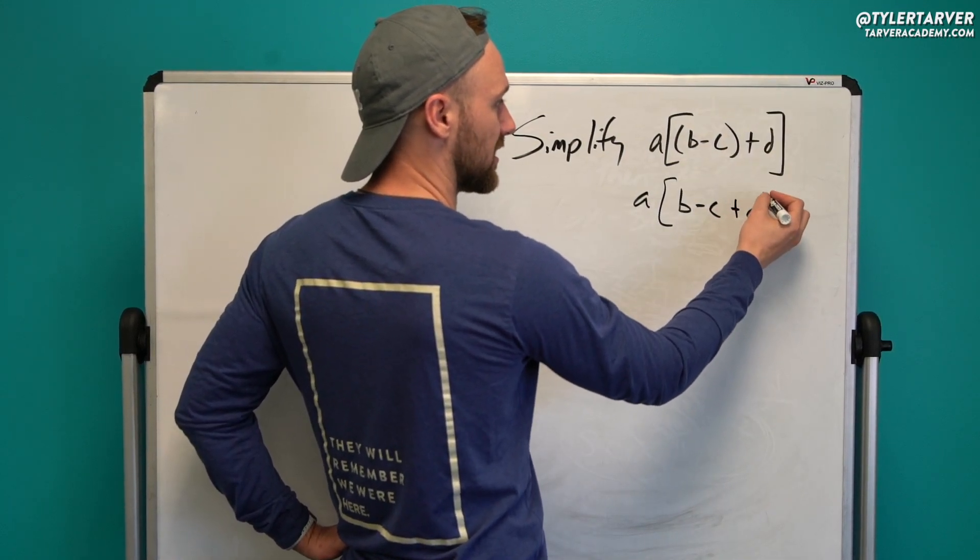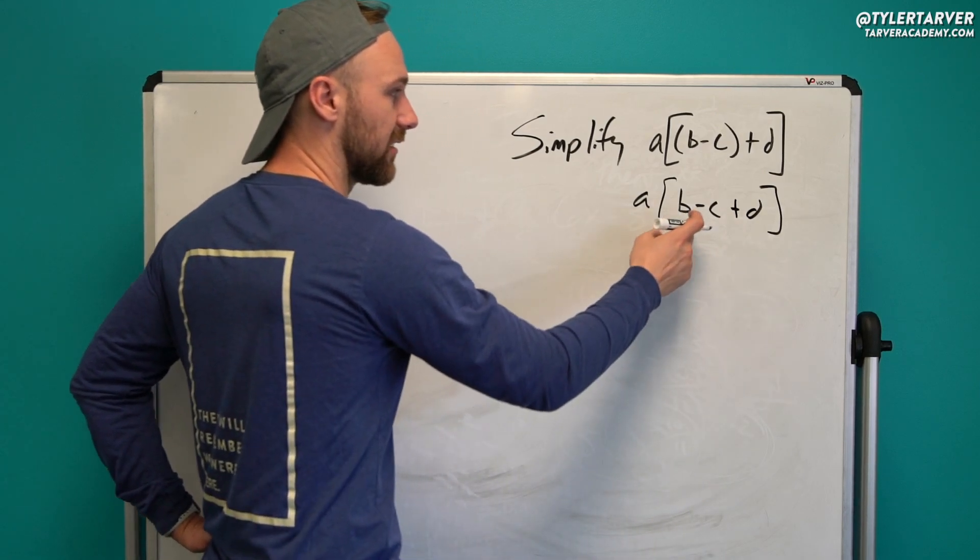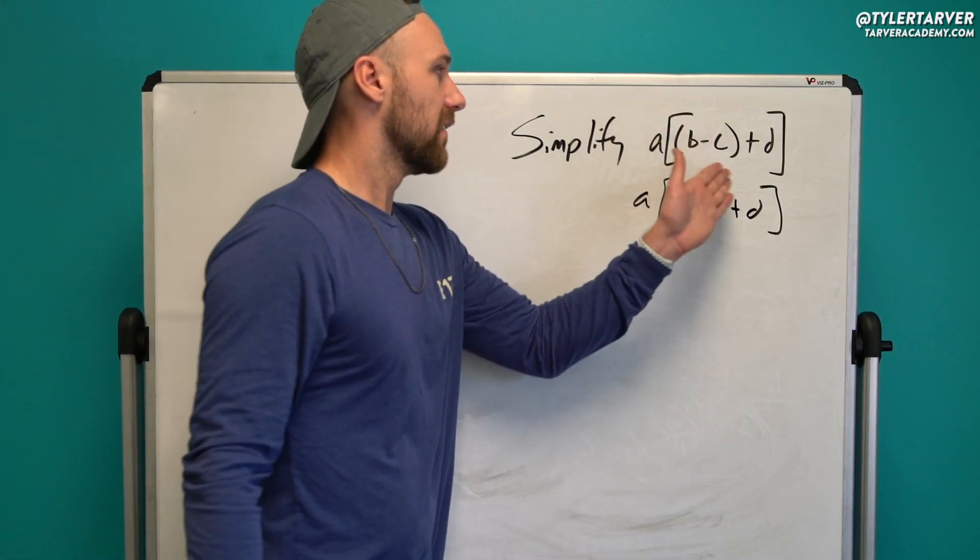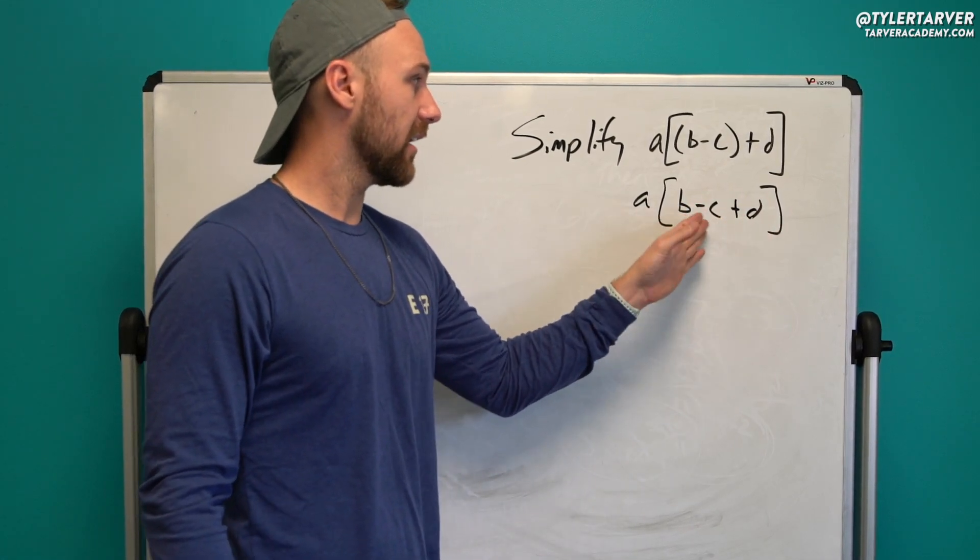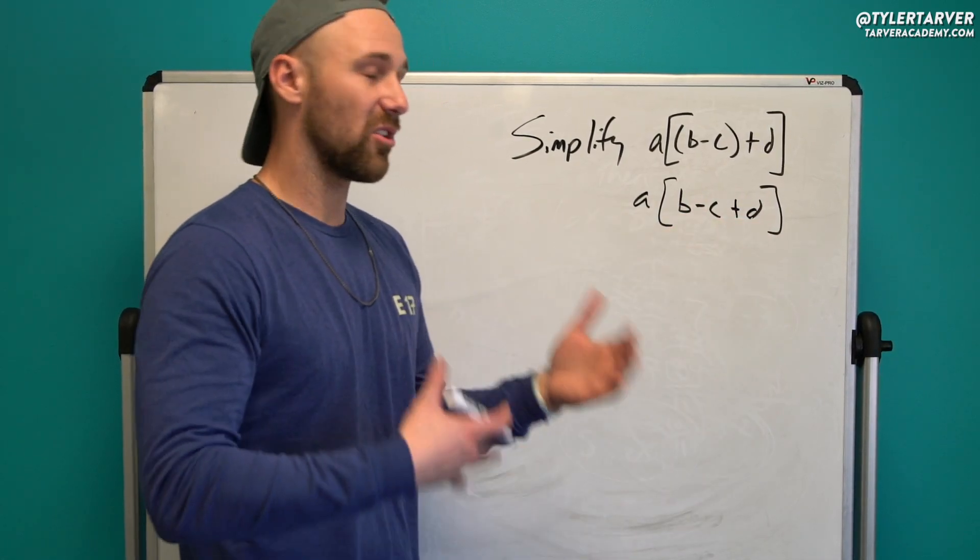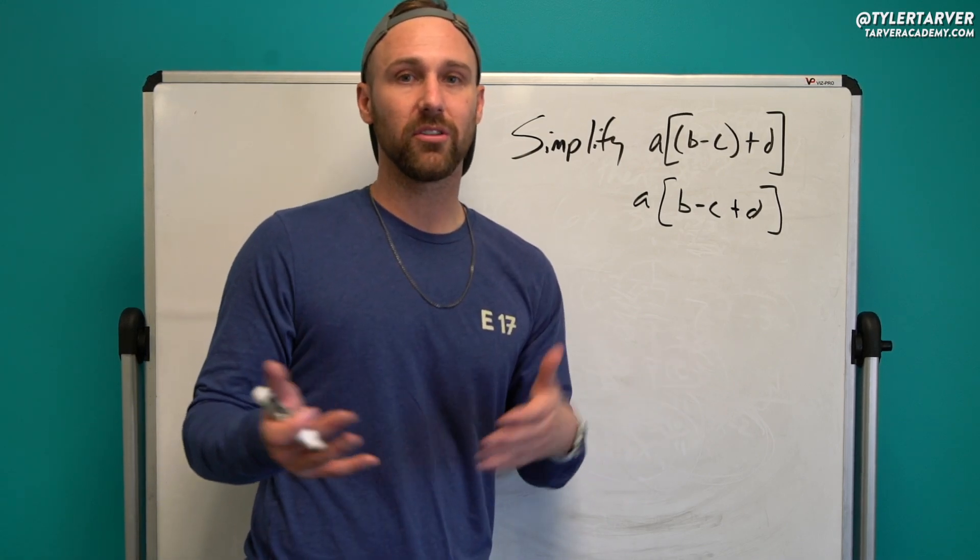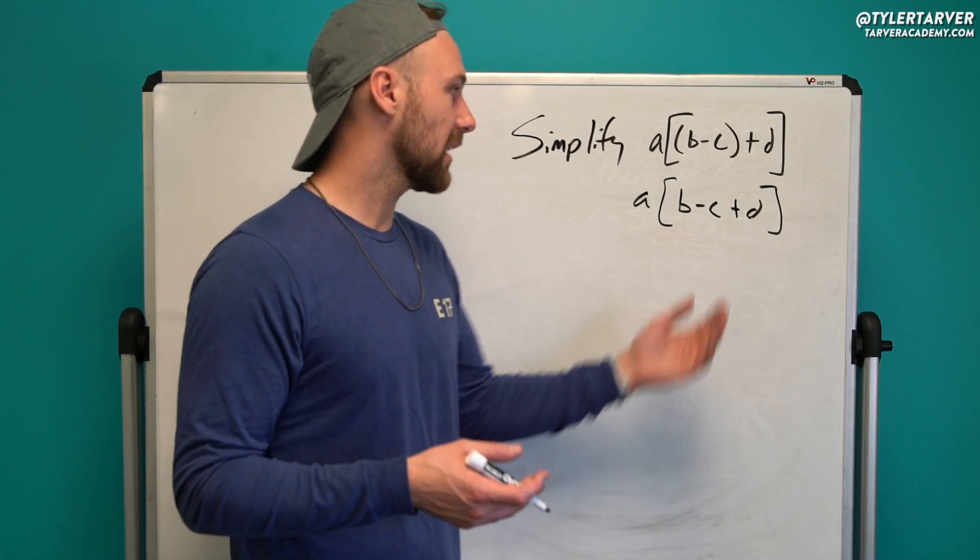So all it really amounts to is that we're dropping that parentheses. Now, that's done. We're here. Can I simplify any of this? No, I can't. Nothing can be simplified inside there because they're all different variables. You don't know what they are. You can't add them or subtract them. Just got to keep it like that.